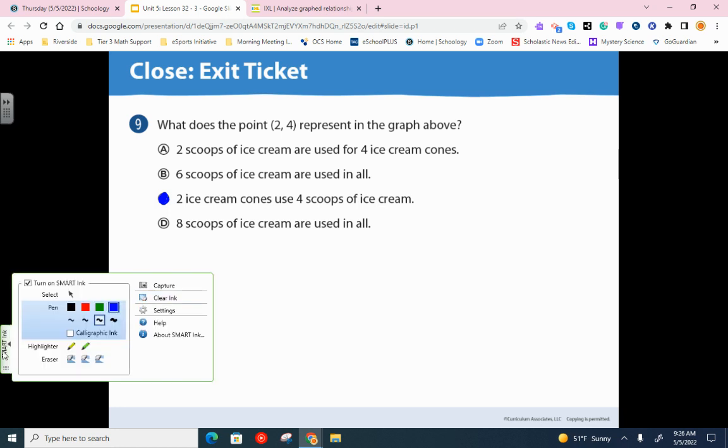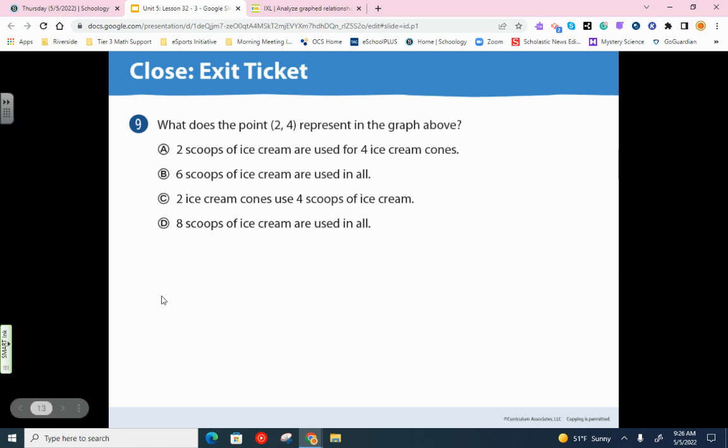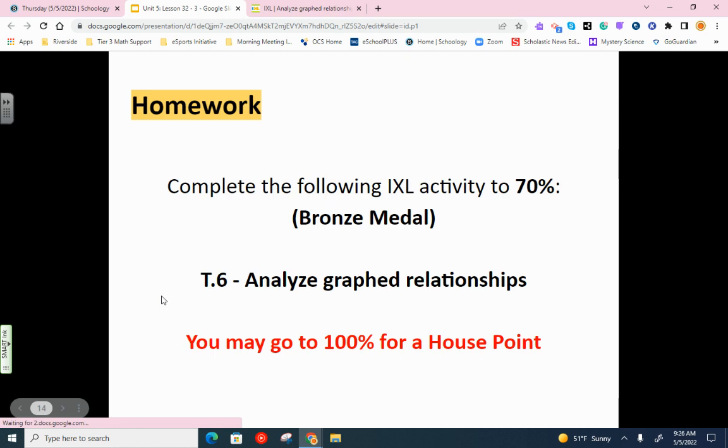Now, the IXL for today is going to be T6. And this is Analyze Graph Relationship. So you basically already did that with the lesson today. You look at the relationship between your x data and your y data and kind of figure out what it's trying to tell you. And you're going to basically answer some questions based on that. If you have any questions, though, don't hesitate to ask me, and I'll try to help you out. Good luck.